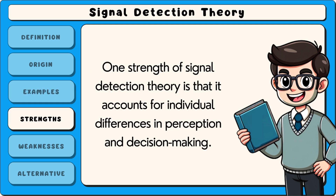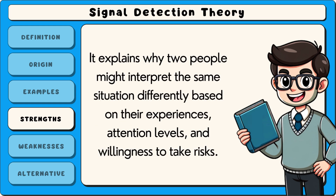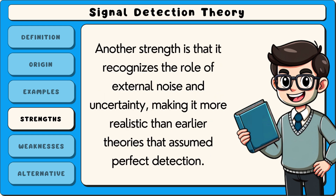One strength of signal detection theory is that it accounts for individual differences in perception and decision-making. It explains why two people might interpret the same situation differently based on their experiences, attention levels and willingness to take risks. Another strength is that it recognises the role of external noise and uncertainty, making it more realistic than earlier theories that assumed perfect detection.